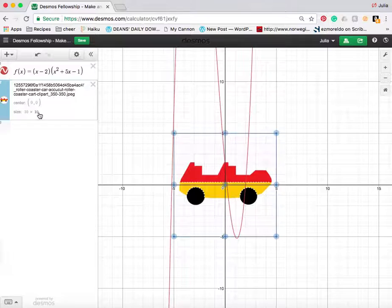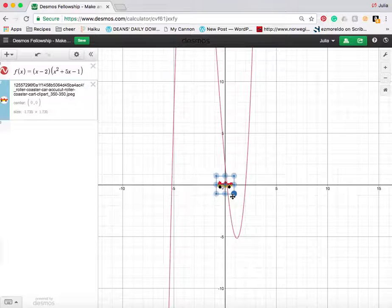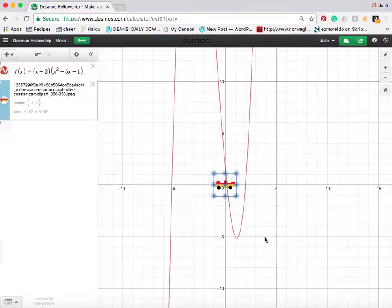Now I have this giant image on my screen. I can either change the size up here or click and drag it to wherever I want it to go. I want it to be this big so it looks like it would fit on the polynomial really easily.